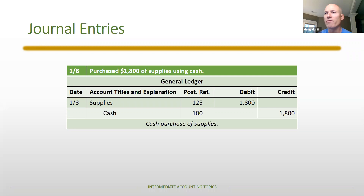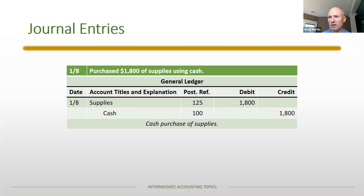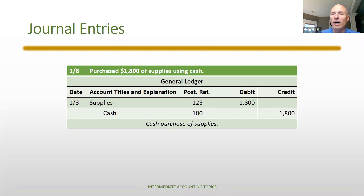Regarding post-reference numbers: I'm using the same numbers as the book where I could figure it out. I won't count off on a test if you put supplies in as 135 instead of 125 — that's not wrong. But if you said supplies is 225 that would be wrong, because the 200s are reserved for liability accounts, not asset accounts. As long as you're in the hundreds for assets, you're fine.